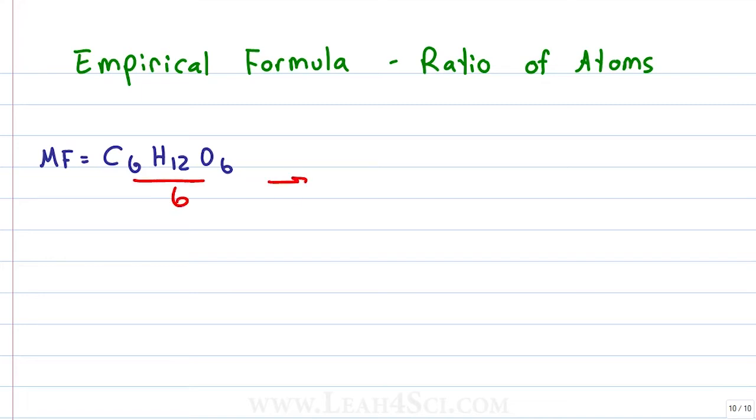So when we divide each one by 6, we get a new formula. C6 divided by 6 is C1 or just C. H12 divided by 6, 12 divided by 6 is 2, gives me H2. O6 divided by 6 is just 1 for CH2O. This is the empirical formula or smallest whole number ratio for the molecule glucose.